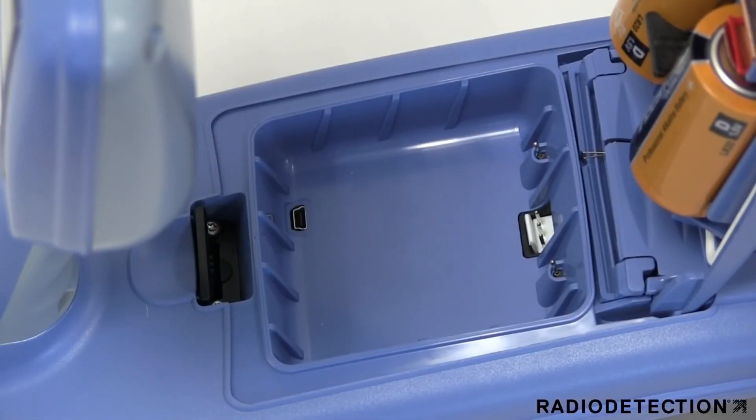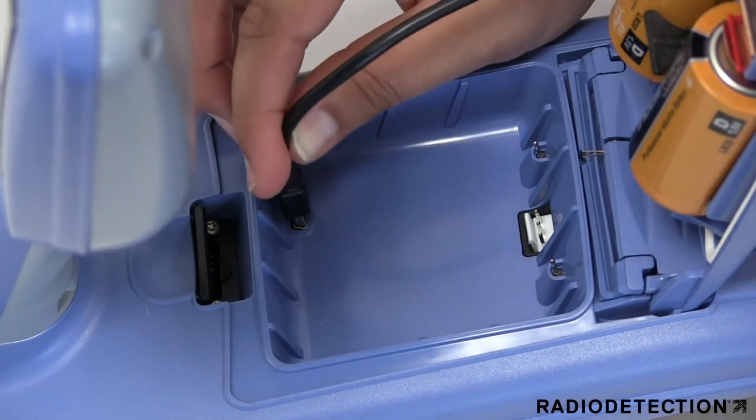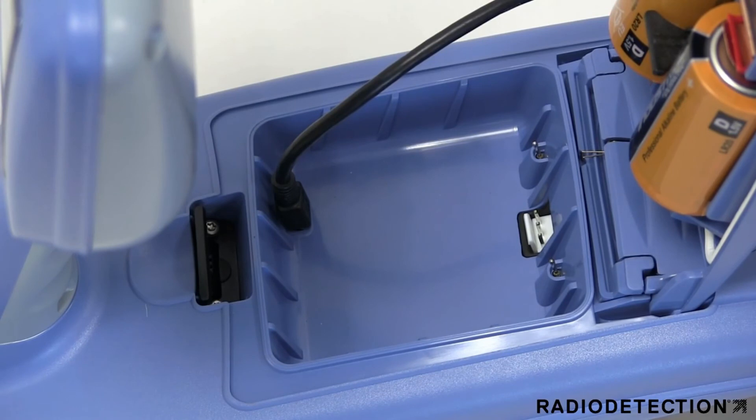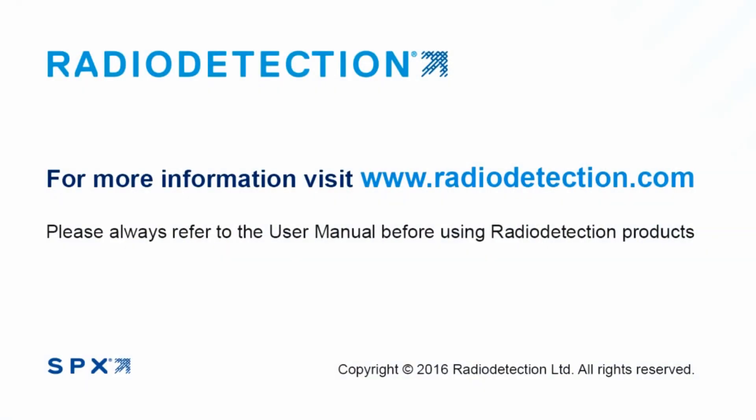Underneath the battery compartment you will find a USB socket that can be used to connect the locator to RD Manager, allowing you to update the software and transfer data. RD Manager can be downloaded for free from www.radiodetection.com.